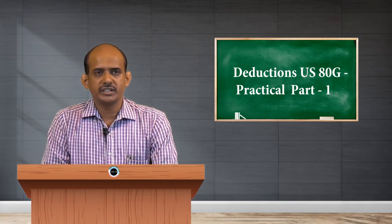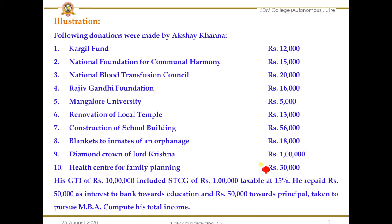Let me go through the question first. Following donations were made by Akshay Khanna: Kargil Fund rupees 12,000; National Foundation for Communal Harmony rupees 15,000; National Blood Transfusion Council rupees 20,000; Rajiv Gandhi Foundation rupees 16,000; Mangalur University rupees 5,000; Renovation of local temple rupees 13,000; Construction of school building rupees 56,000; Blankets to inmates of an orphanage rupees 18,000; Diamond crown of Lord Krishna rupees 1 lakh; Health centre for family planning rupees 30,000.